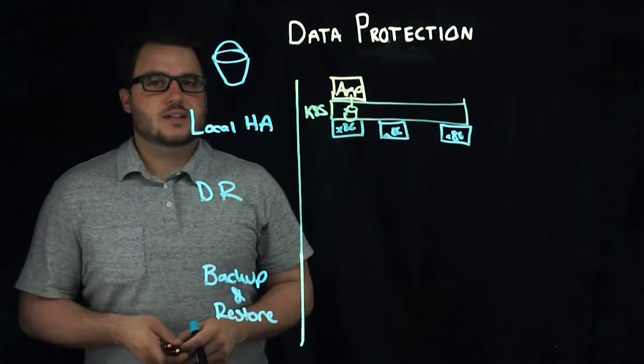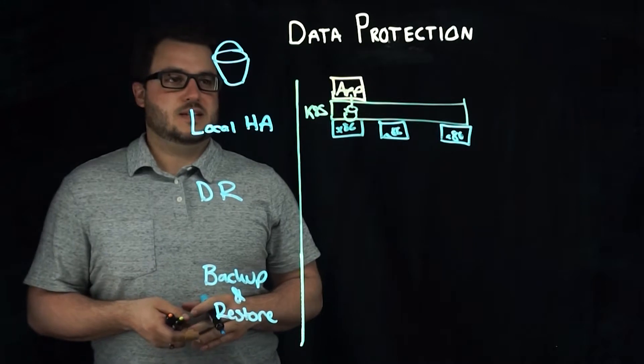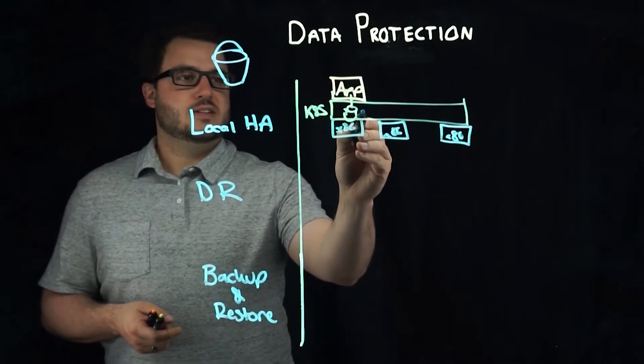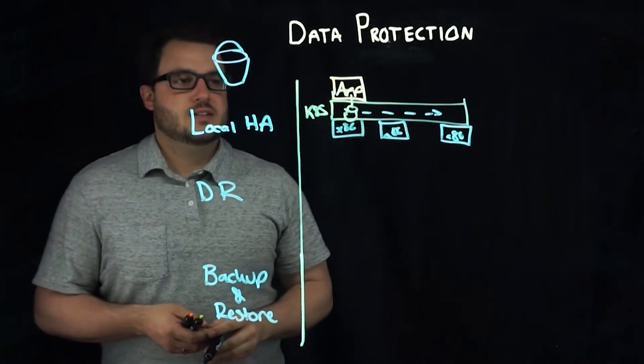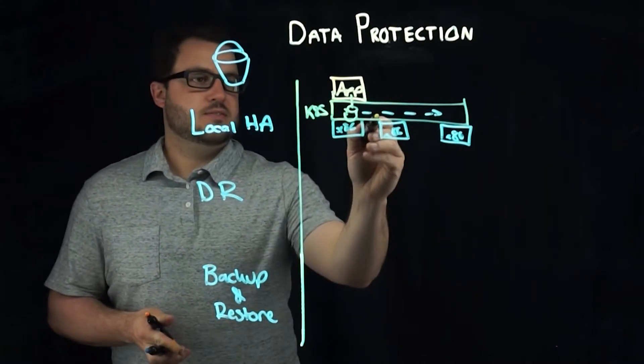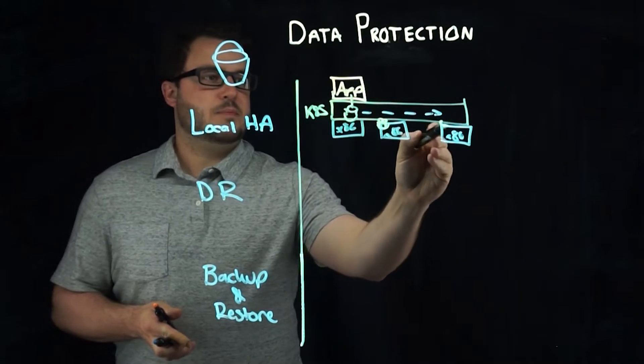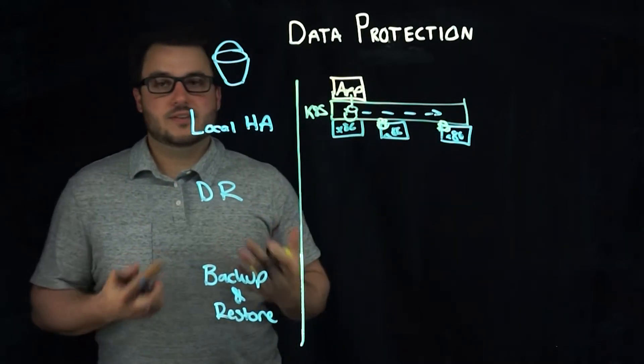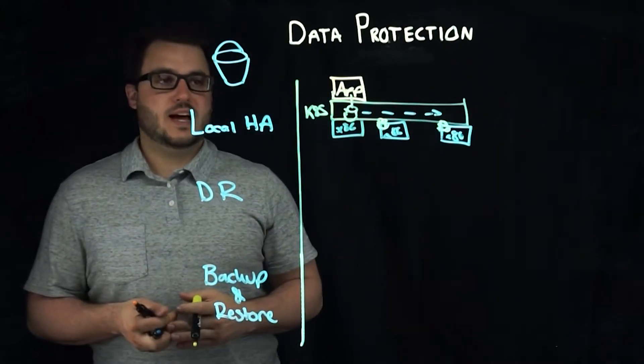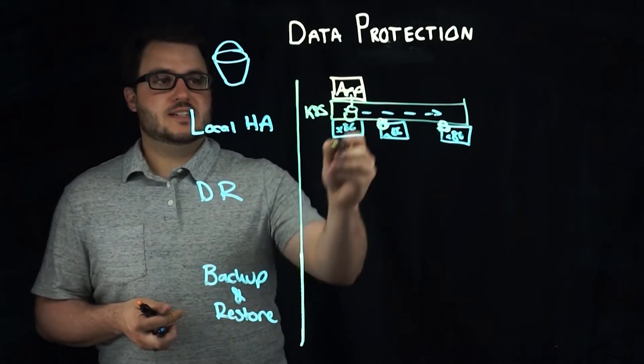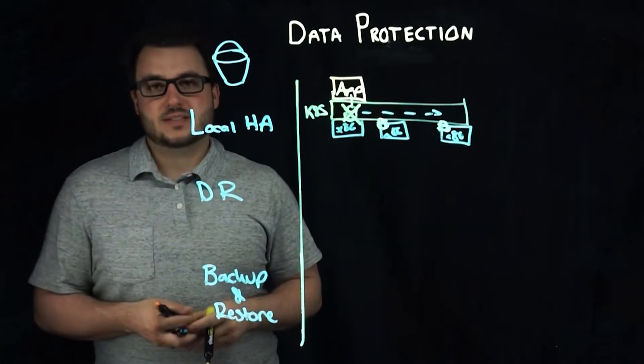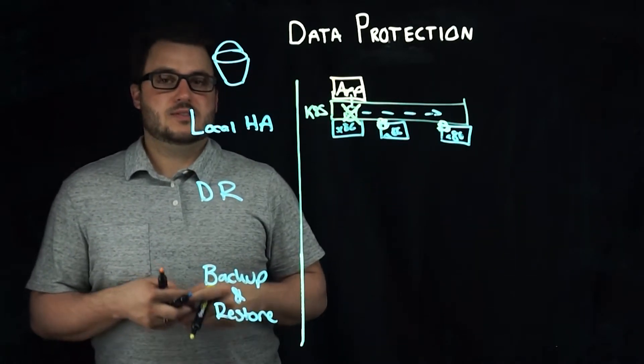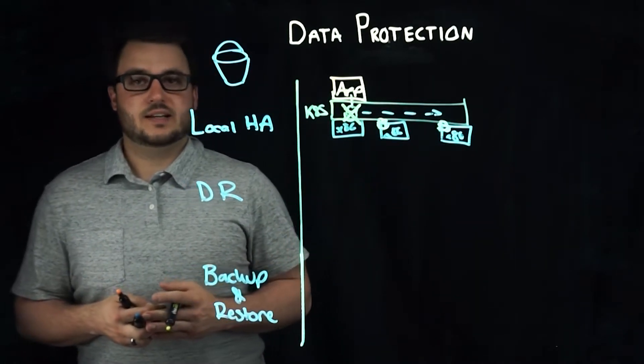Local high availability means that the data itself is replicated across nodes such that the volume has a copy on other nodes. Meaning that if the disk fails at this level, there are other copies of that data available so that you can make your application highly available.